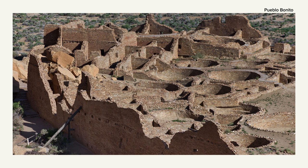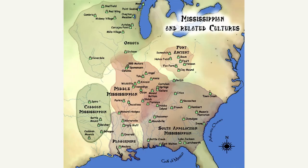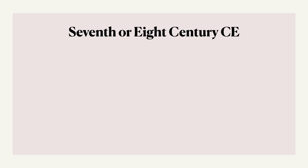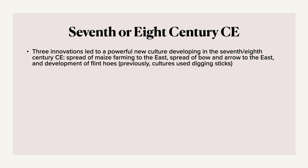Another culture is the Mississippian culture, which is actually a bunch of different cultures. The Mississippians were multiple nations that shared a similar culture and probably came from some common ancestors. They date back to around the 7th or 8th century. Three different innovations led to a powerful new culture: the spread of maize farming from west to east, the spread of the bow and arrow from west to east, and the development of flint hoes — a much better tool than the digging sticks cultures had previously used.